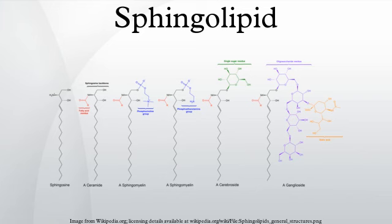Sphingolipids, or glycosylceramides, are a class of lipids containing a backbone of sphingoid bases, a set of aliphatic amino alcohols that includes sphingosine. They were discovered in brain extracts in the 1870s and were named for the mythological sphinx because of their enigmatic nature. These compounds play important roles in signal transmission and cell recognition.